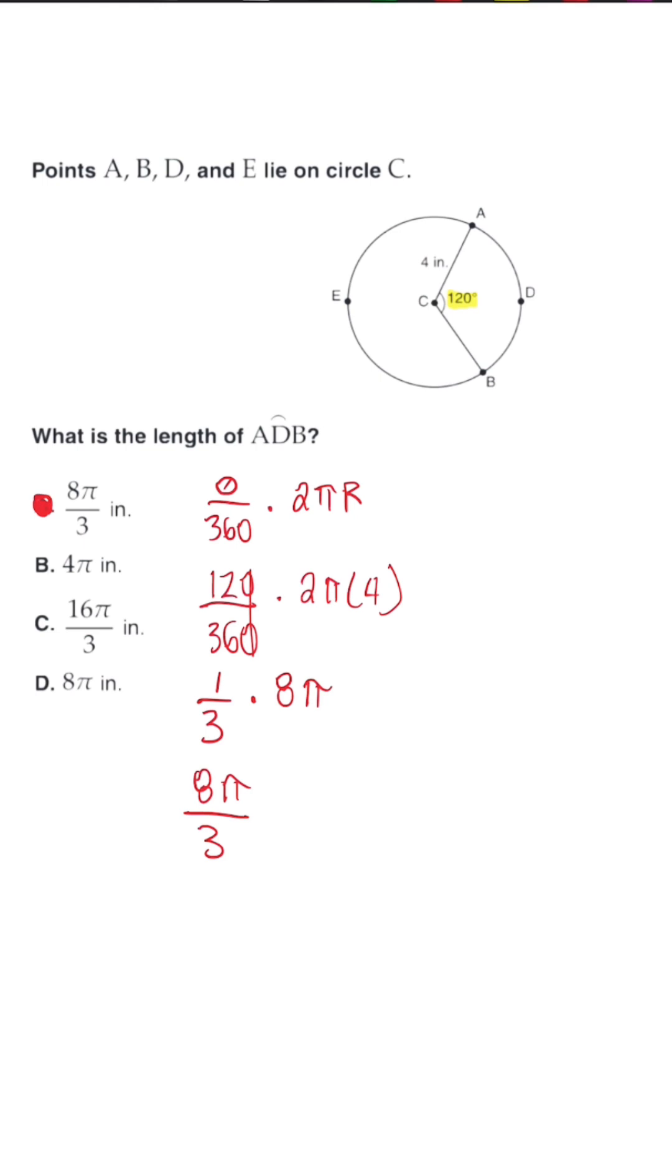Now the other way that we could do this is by using the arc length formula when we're dealing with radians. So that is s is equal to r times theta.